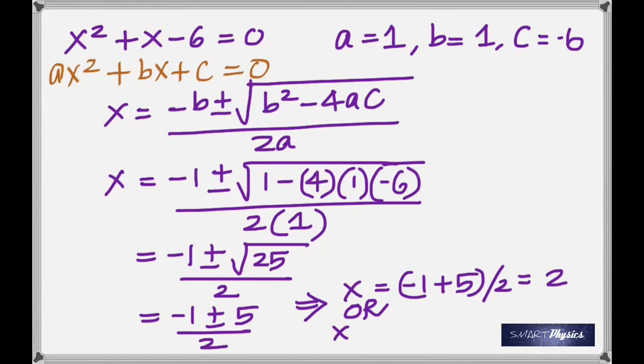Or the other solution is minus 1 minus 5 divided by 2, that gives -3. So the answers are +2 and -3.